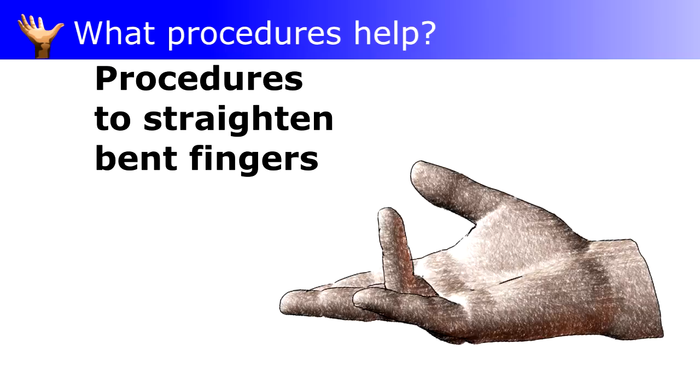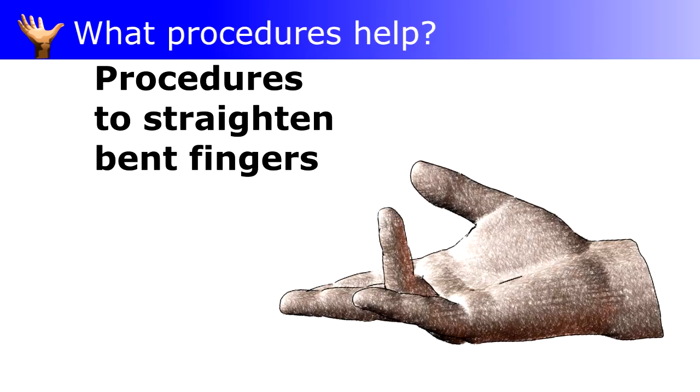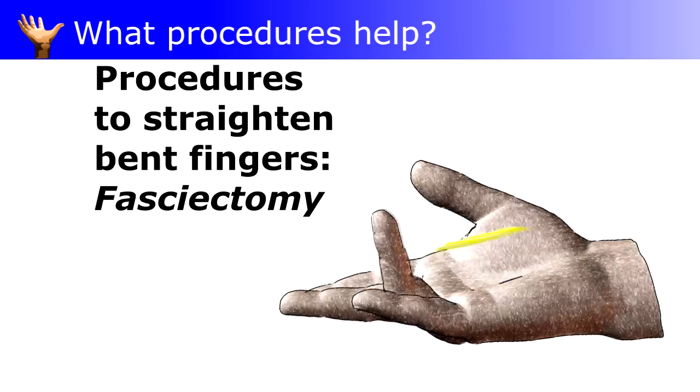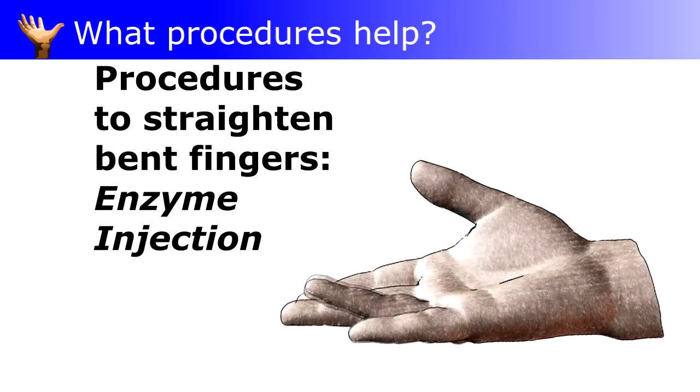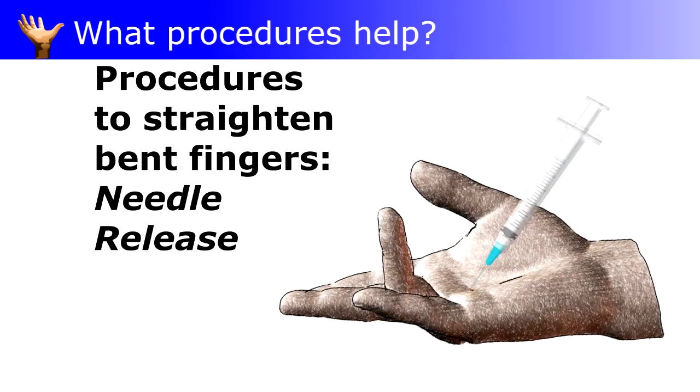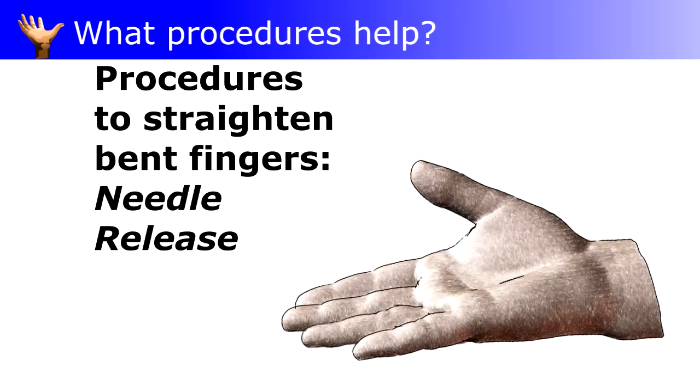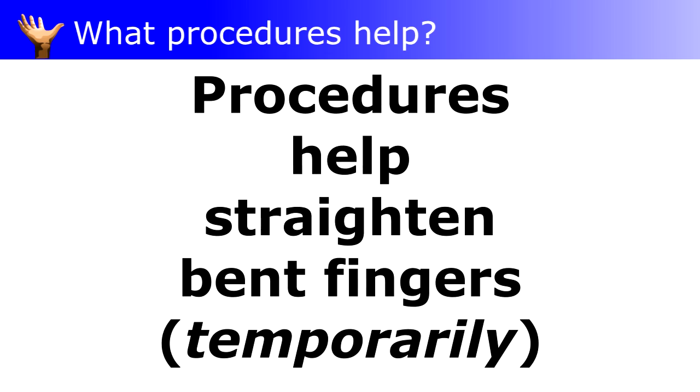What kind of procedure? There are at least three different options. The most common is surgery to remove the tight tissue from the palm. The second is a shot in the palm to dissolve the tight tissue. The third is to release tight tissue with a small needle just under the palm. These procedures help,